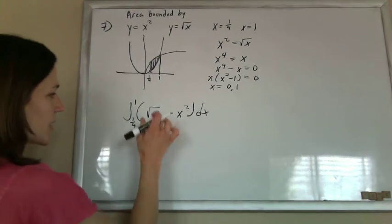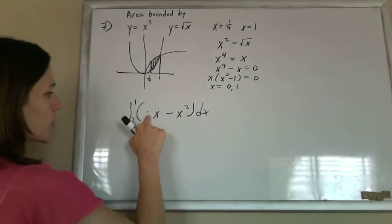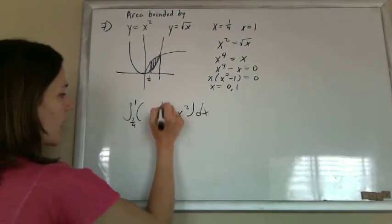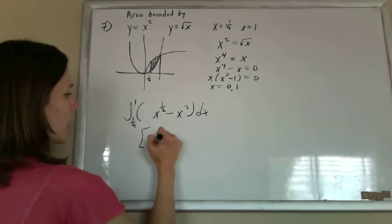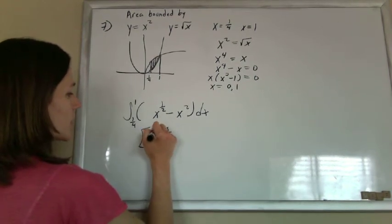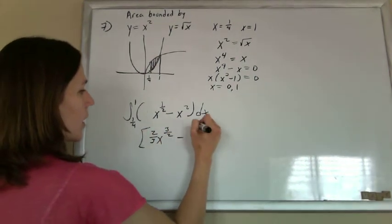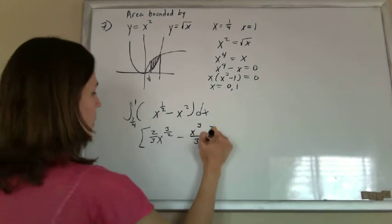And just take the anti-derivatives. I'm going to rewrite the square root of x as x to the one-half, so that I can add one to the power and divide by what I get. Add one to the power, divide by what I get.